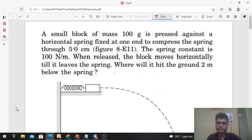Okay hi everyone, so today let's discuss this interesting problem. It says a small block of mass 100 grams is pressed against a horizontal spring fixed at one end to compress the spring through 5 centimeters. The spring constant is 100 newton per meter. When released, the block moves horizontally till it leaves the spring. Where will it hit the ground 2 meters below the spring?